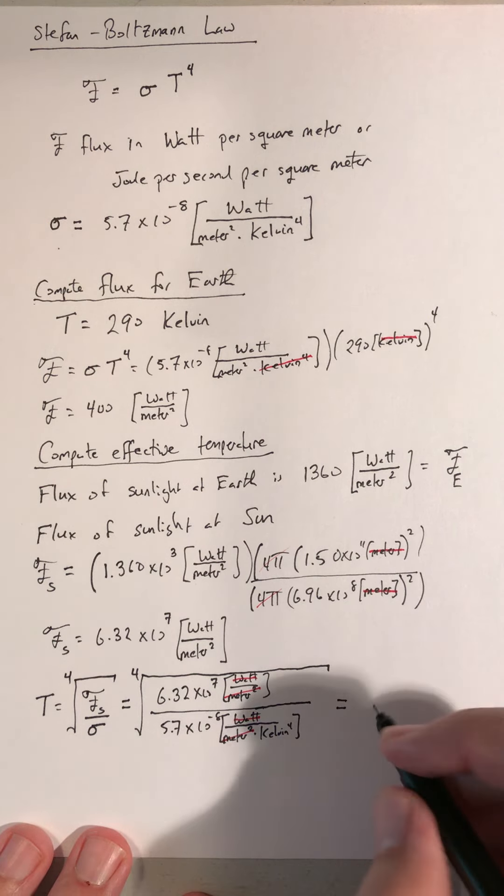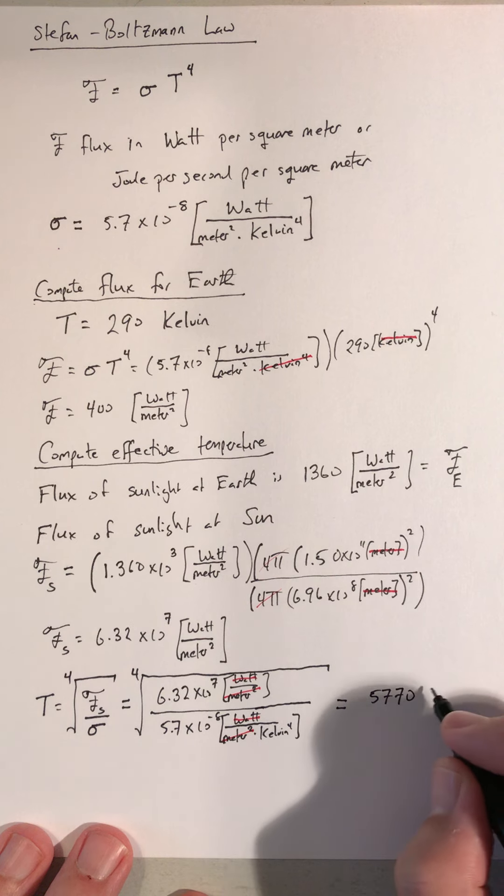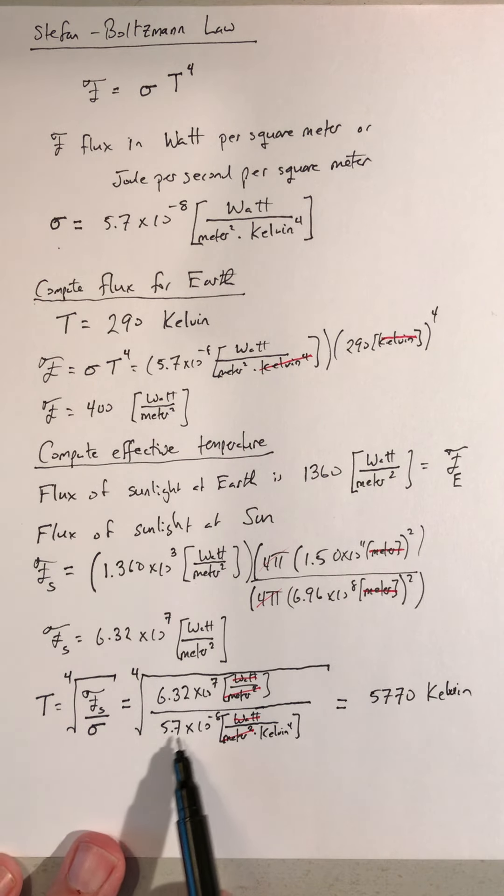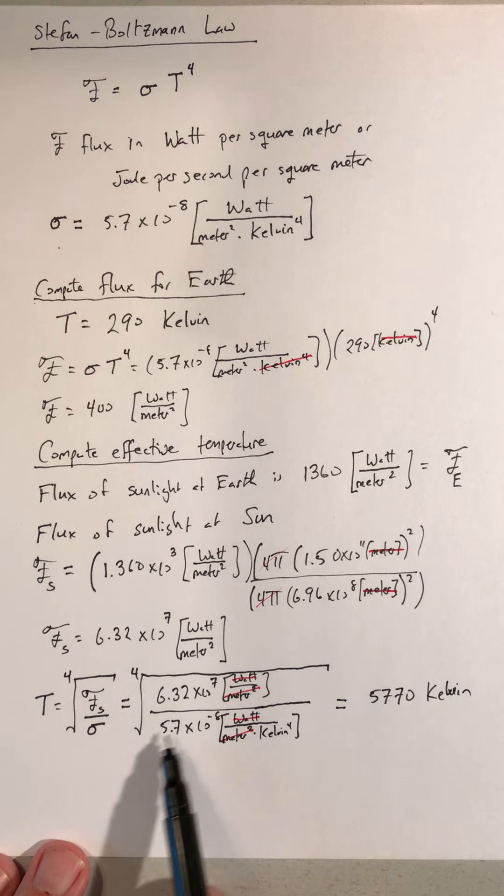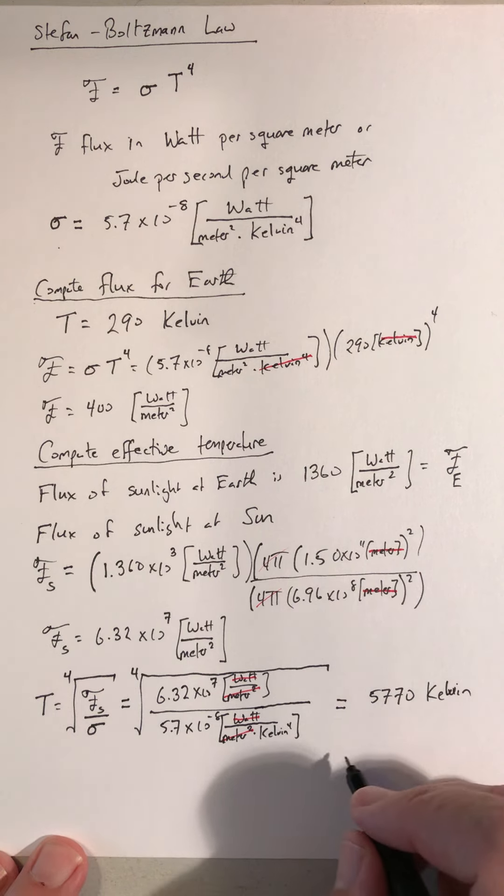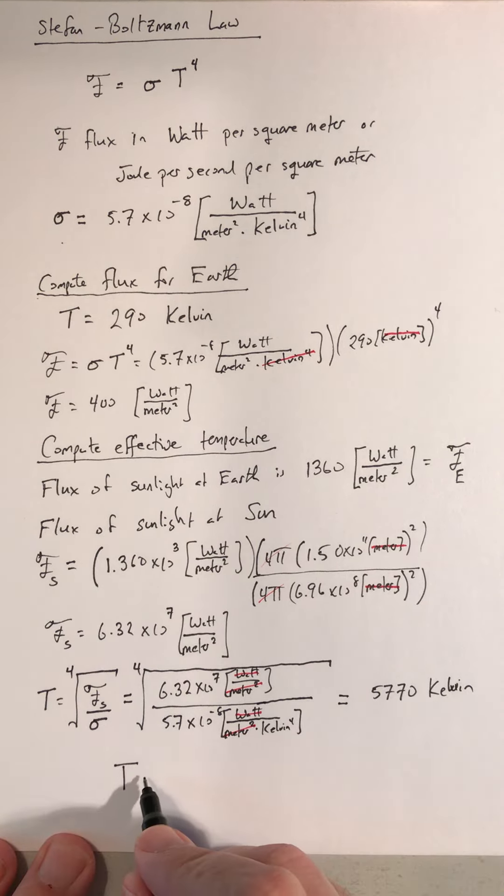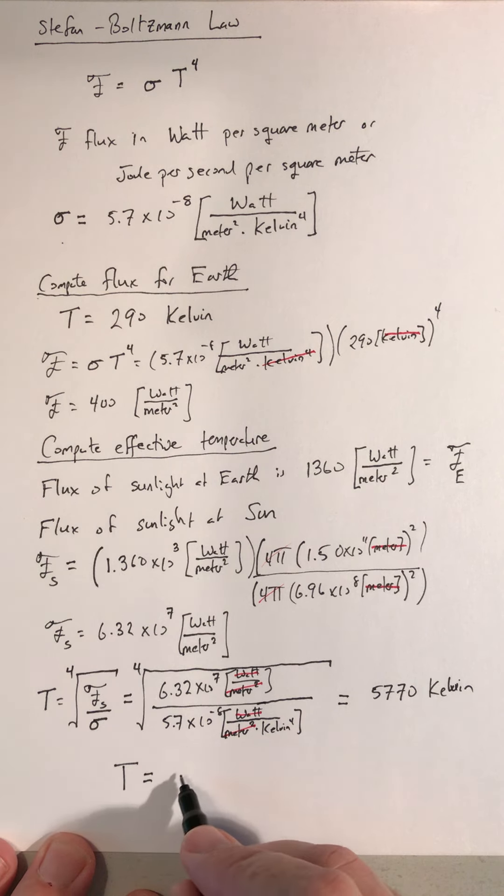If we do that, I have 5,770 Kelvin. But I only have two decimals significance in sigma. So probably a better answer for the effective temperature for the surface of the Sun would be 5,800 Kelvin.